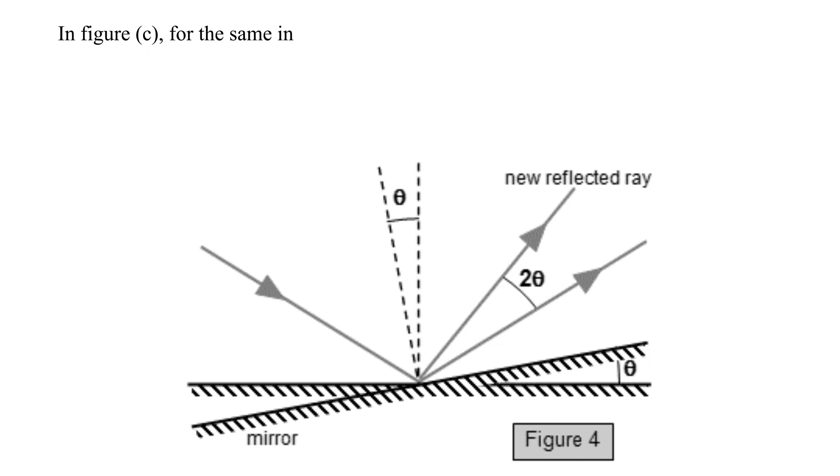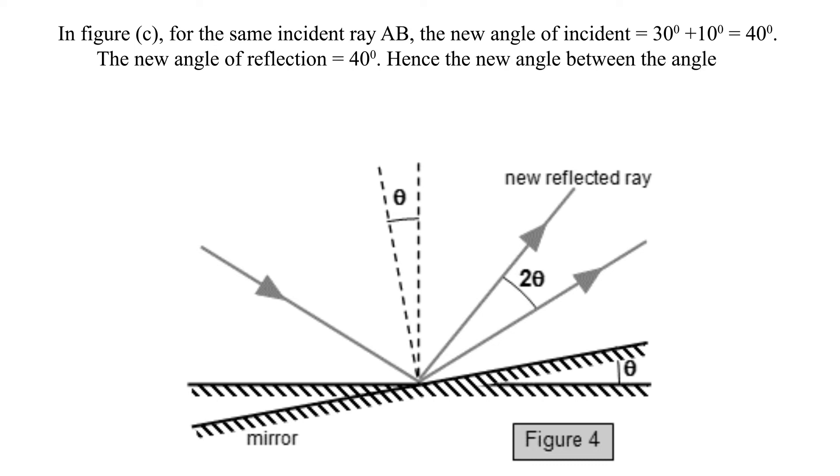In figure C, for the same incident ray AB, the new angle of incidence equals 30 degrees plus 10 degrees equals 40 degrees. The new angle of reflection equals 40 degrees. Hence, the new angle between the angle of incidence and the angle of reflection equals 40 degrees plus 40 degrees equals 80 degrees.